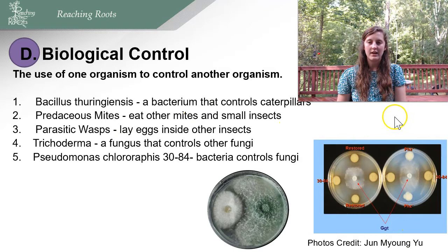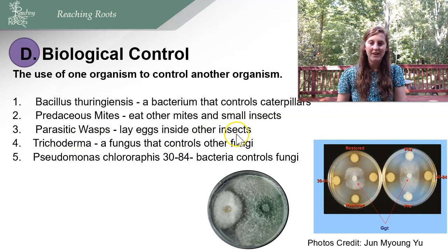Some examples of biological control include: Bacillus thuringiensis, a bacteria that controls caterpillars; predacious mites that eat other mites and small insects; parasitic wasps that lay eggs inside other insects, killing them; Trichoderma, a fungus that controls other fungi; and Pseudomonas fluorescens, a bacteria that controls fungi.